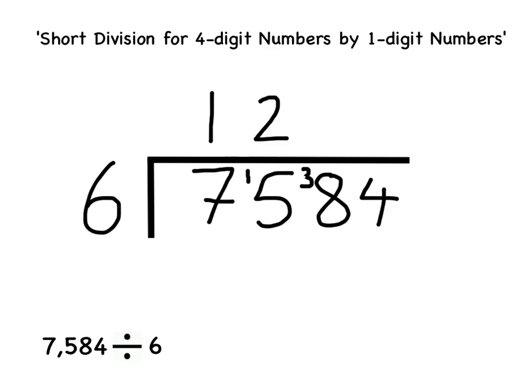By putting the remainder of 3 here, that now turns the 8 into 38. The closest multiple of 6 that I can think of to 38 is 36. There are six 6's in 36. So I'm going to write a 6 here, and there is a remainder of 2. Now that 2 goes here.